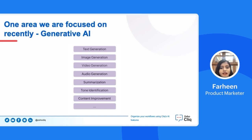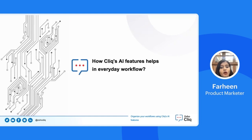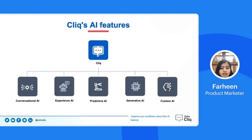Let's look at how Cliq uses AI technologies and features to help you organize your daily workflows. Cliq offers various AI features for different purposes that can automate your daily tasks, increase organizational productivity, and facilitate your workflow. We have categorized Cliq's AI features into five types: conversational, experience, predictive, generative, and custom AI.